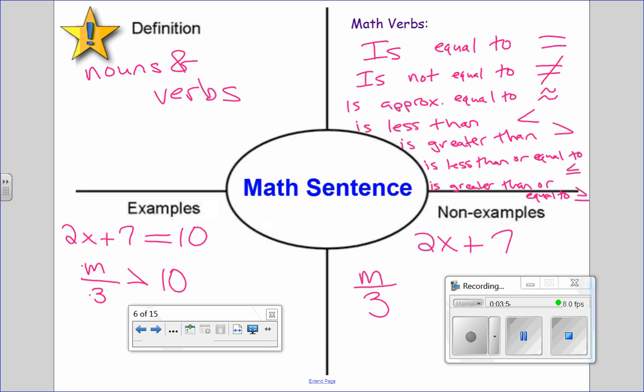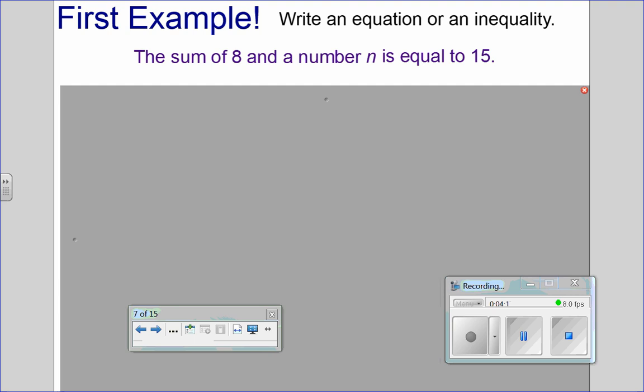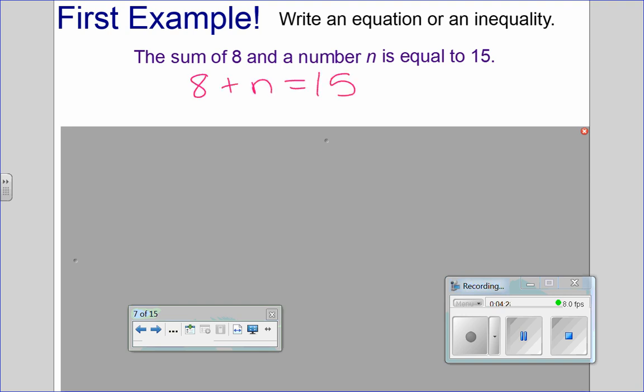Any questions before we try a few examples? So, our instructions on this slide are write an equation or an inequality from the following phrase. The sum of 8 and a number N is equal to 15. Very, very similar to what we did last week. But we're adding that is equal to this week to make it a sentence. So, any volunteer think they've got this? I can write down the equation you came up with. Anthony. Perfect. So, last week, all of you did 8 plus N, but now we're adding on is equal to 15.